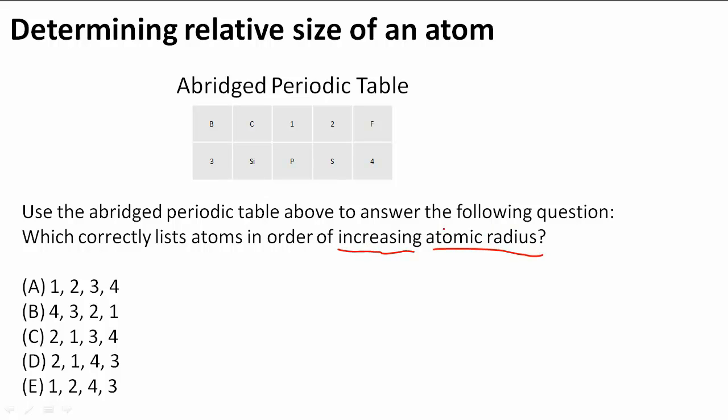So this problem might seem hard but we just have to remember the trends, the periodic trends that are associated with atomic radius. Here, this is sometimes called atomic size. So when you hear atomic size you should think also atomic radius.